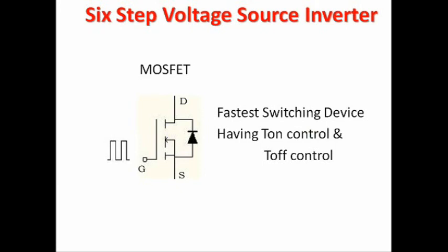The MOSFET is a fast switching device with its own turn-on and turn-off control. Comparing MOSFET with the SCR: the SCR can be turned on with the help of a gate pulse, but it cannot be turned off with the gate pulse. Whenever it receives forward bias it will conduct, and it will only switch off when fed with reverse bias. This means the SCR is a semi-controlled switch — we can only turn it on, not off, with the gate pulse.